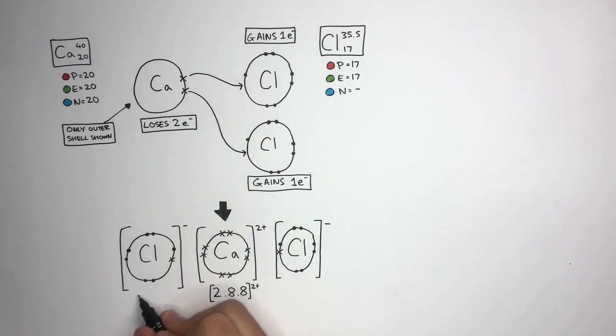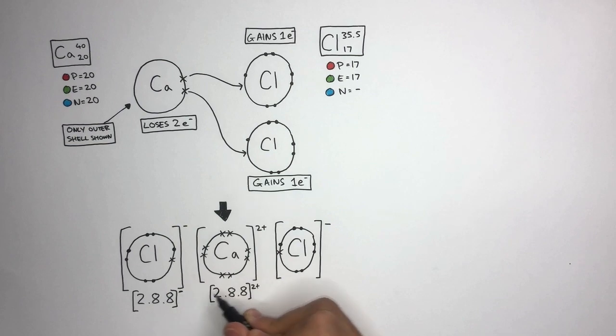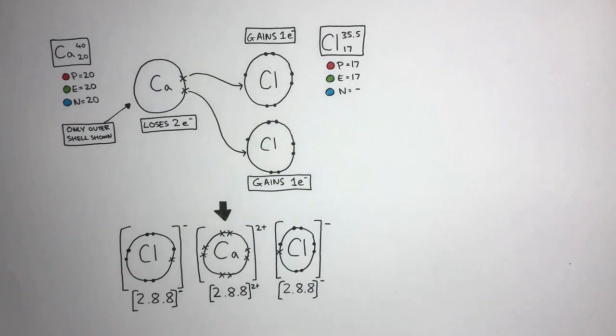Writing the electronic configuration for the two Chlorine ions is 2.8.8 with the square brackets and then the minus one charge. This is because the Chlorine atom has gained one electron to become a Chlorine ion. So the chemical formula is CaCl2.